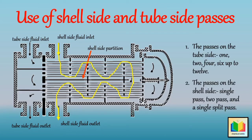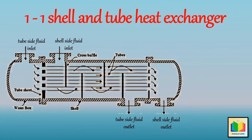Based on the number of passes provided on the tube side as well as on the shell side, the shell and tube heat exchangers are referred to as 1-1 shell and tube heat exchangers, 1-2 shell and tube heat exchangers, and 2-4 shell and tube heat exchangers. So let's see what is meant by 1-1 shell and tube heat exchanger.